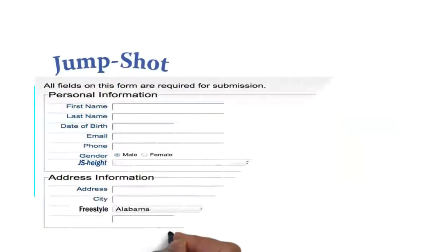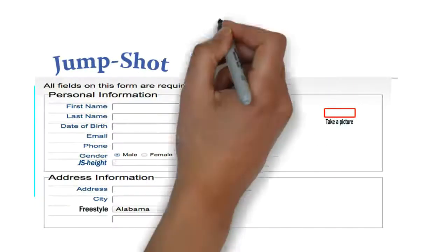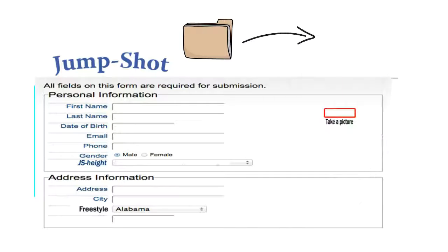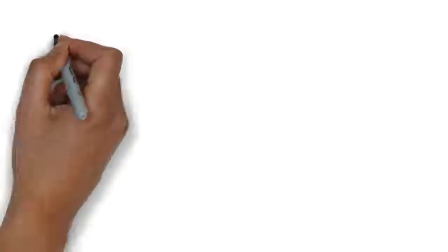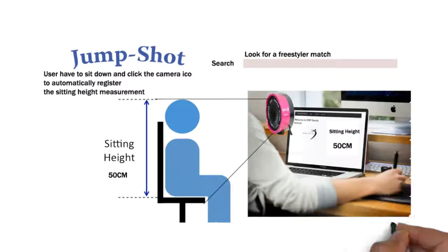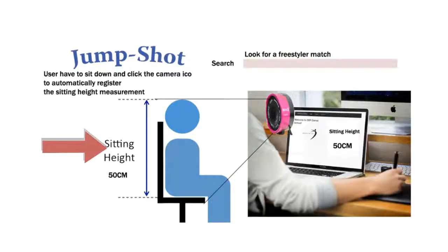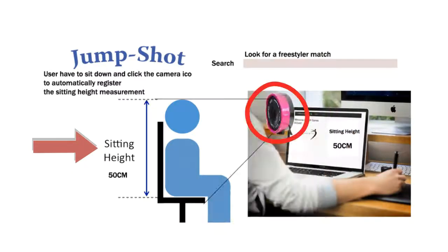When user submits the registration form, the system will create a folder where all user's activities on JumpShot are stored and played back on the monitor screen. User fills in the registration form while sitting down. The system records user's sitting height and takes a profile picture at the same time.